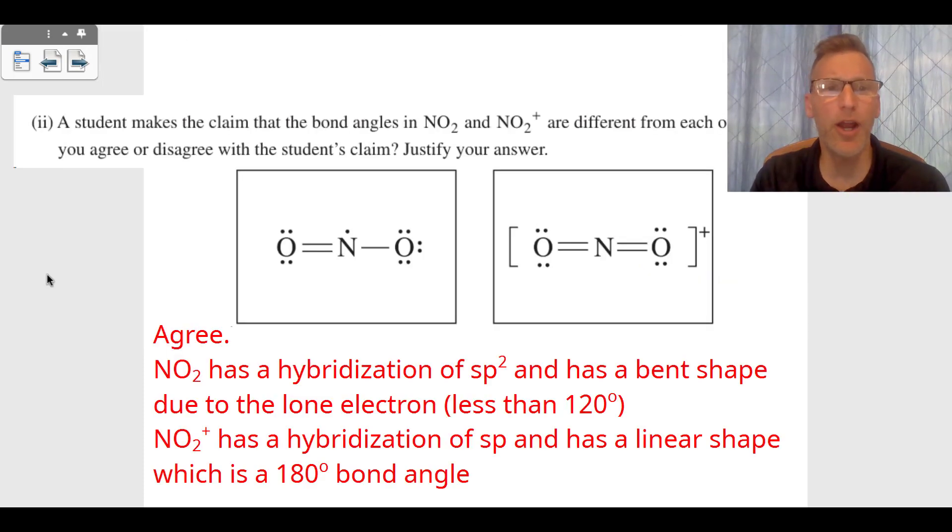Our last point of this problem: a student makes a claim that the bond angles of NO₂ and NO₂⁺ are different. Do we agree or disagree? We agree. Look at the NO₂ on the left-hand side. There's a lone electron, which means the hybridization is sp² and it has a bent shape. It's got less than 120 degrees due to that lone electron.